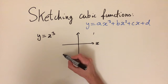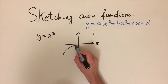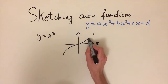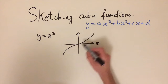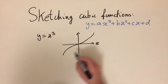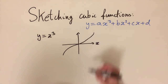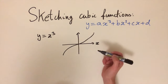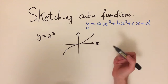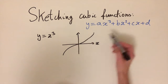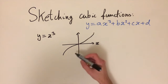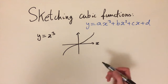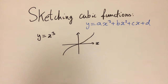In general, y equals x cubed looks something like this — it curves in and then curves back out, starting bottom left and going top right. This is a bit of a special case in the sense that there aren't any turning points. Usually if you have a more complicated cubic equation, then you'll have some turning points, so we're going to look at some examples.